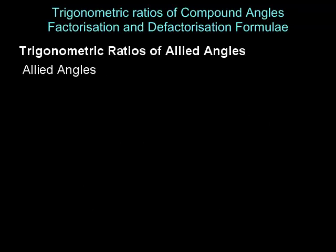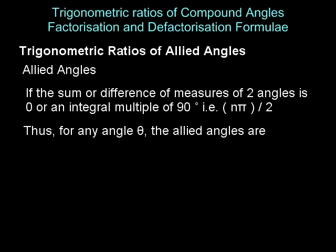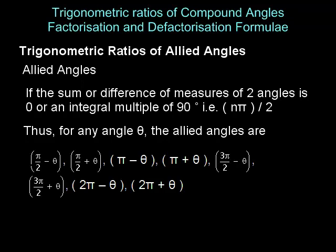Trigonometric ratios of allied angles. If the sum or difference of the measures of two angles is zero or an integral multiple of 90 degrees — that is n pi upon two, where n is an integer — then these angles are called allied angles. Thus, if theta is the measure of a given angle, then the angles minus theta, pi by two minus theta, pi by two plus theta, pi minus theta, pi plus theta, 3 pi by two minus theta, 3 pi by two plus theta, 2 pi minus theta, 2 pi plus theta, etc., are its allied angles.